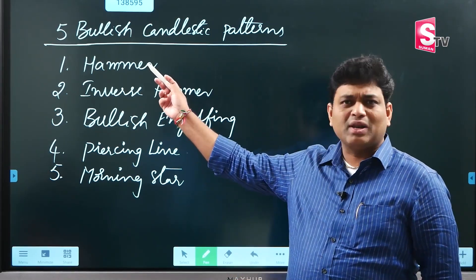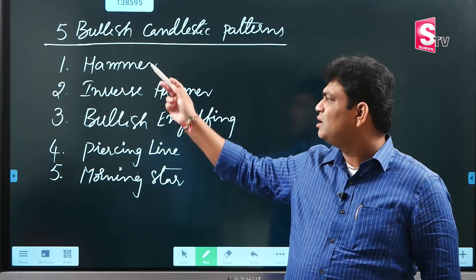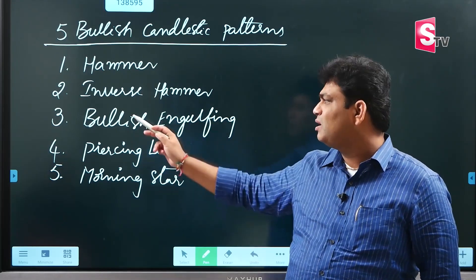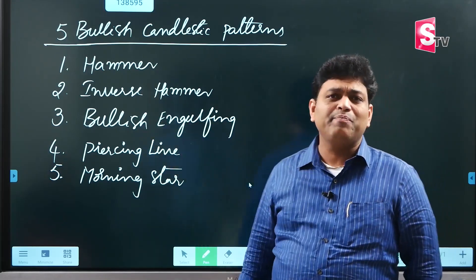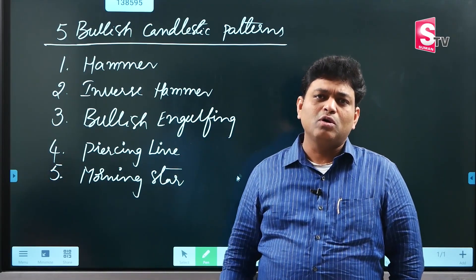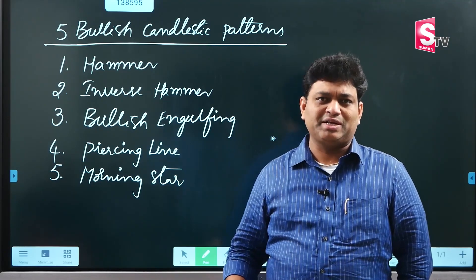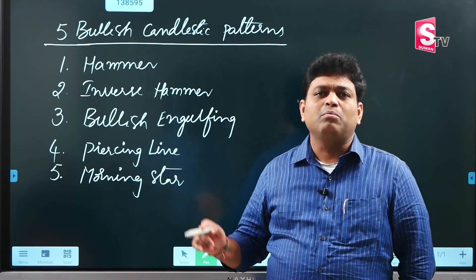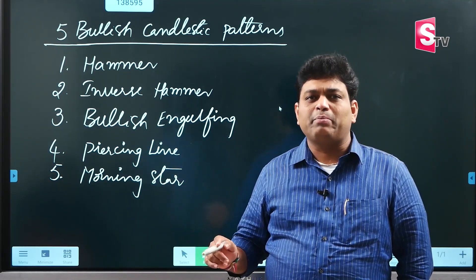The three patterns covered previously were: number 1, Hammer; number 2, Inverse Hammer; and number 3, Bullish Engulfing. So in the previous sessions we discussed 3 bullish candlestick patterns.